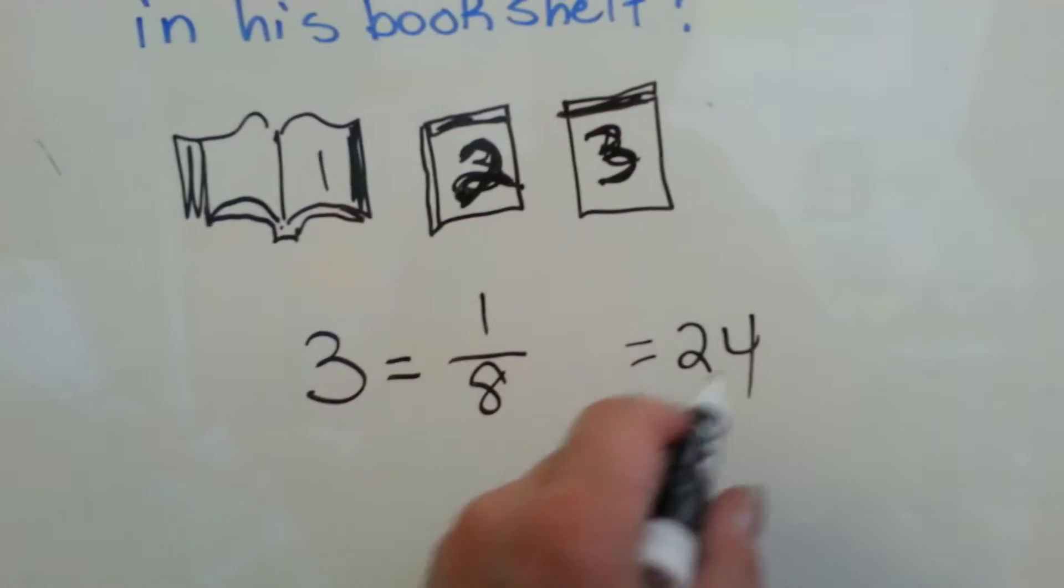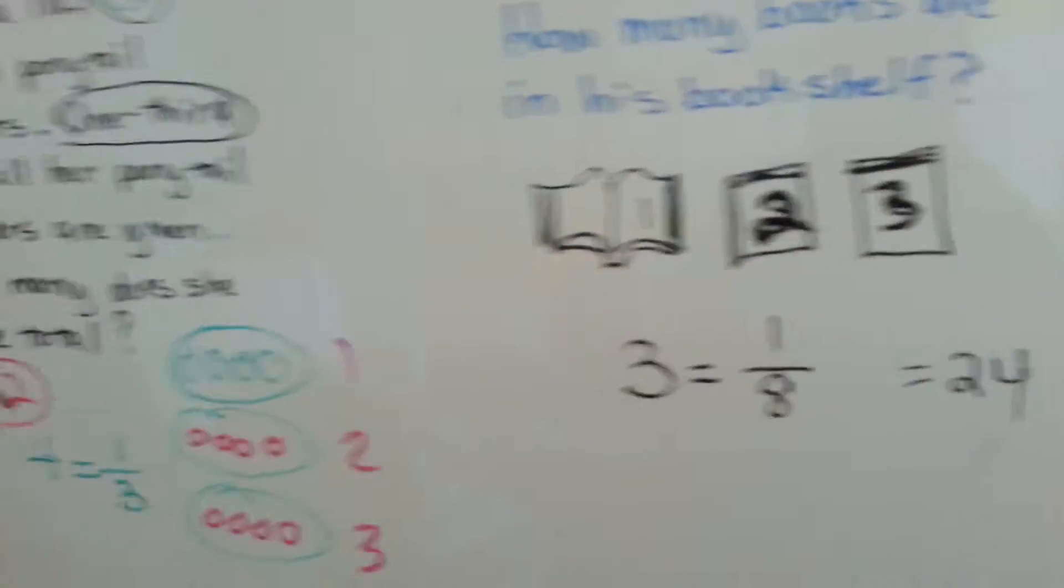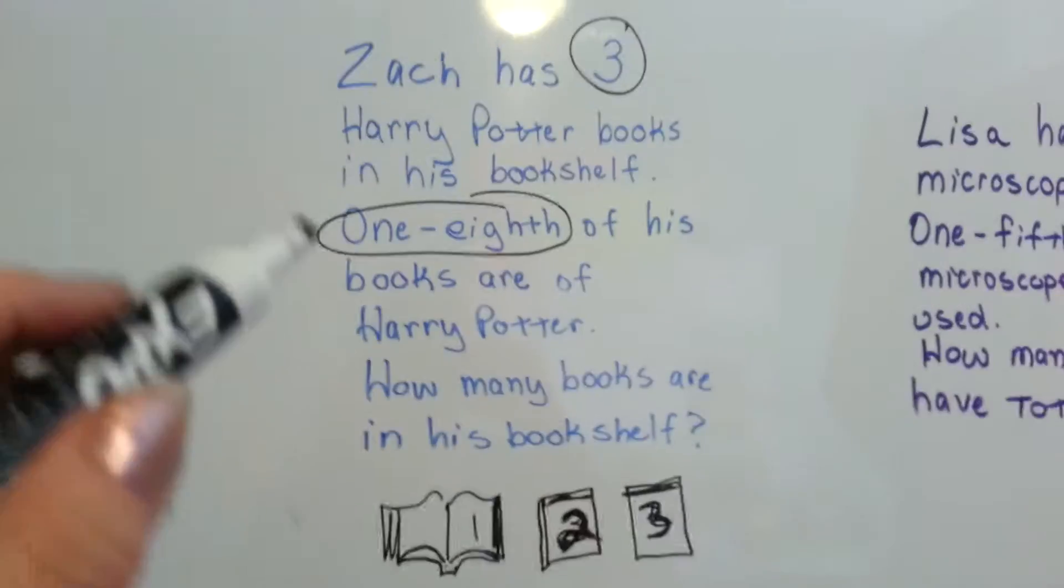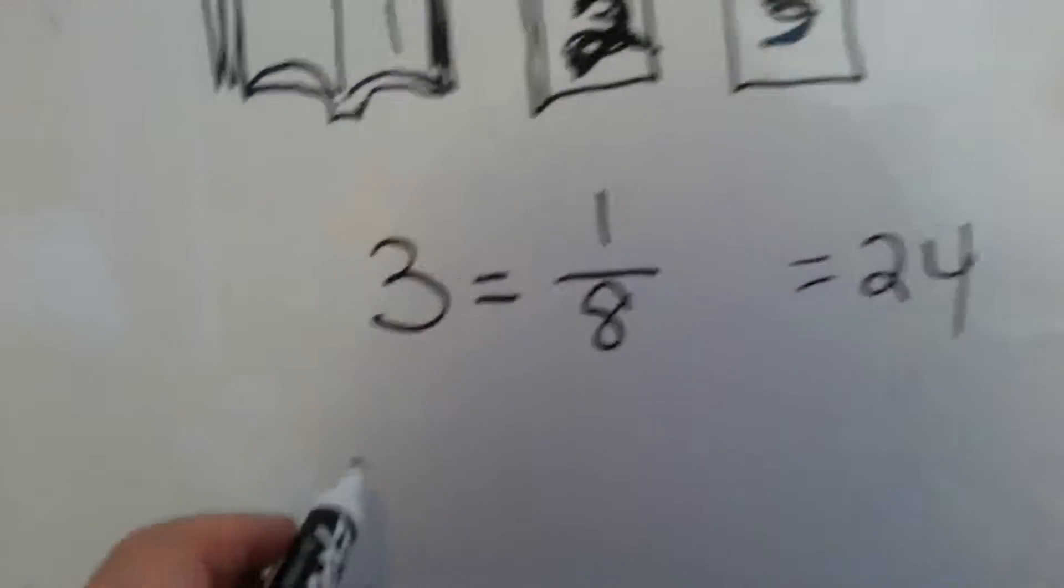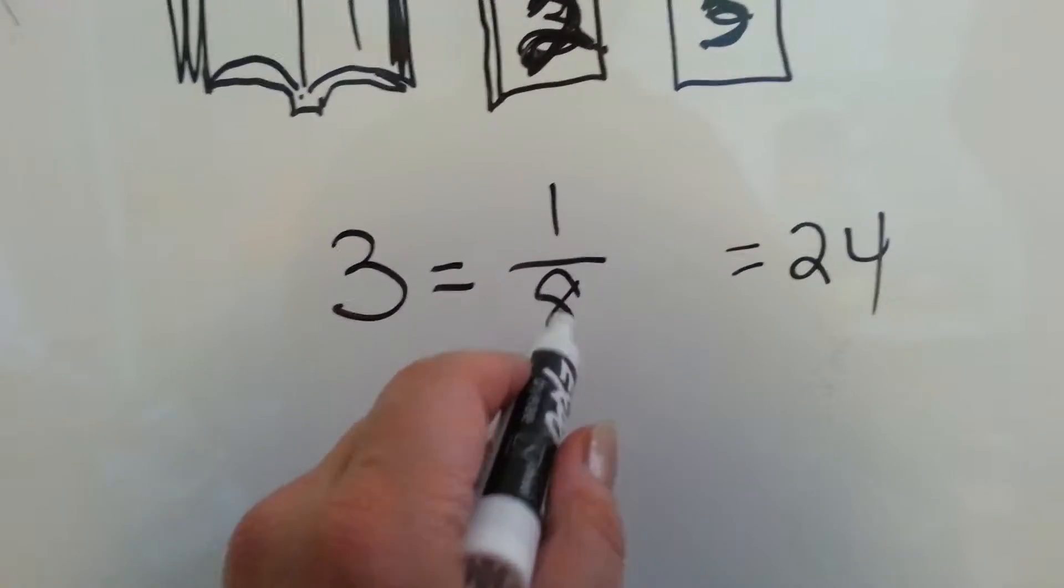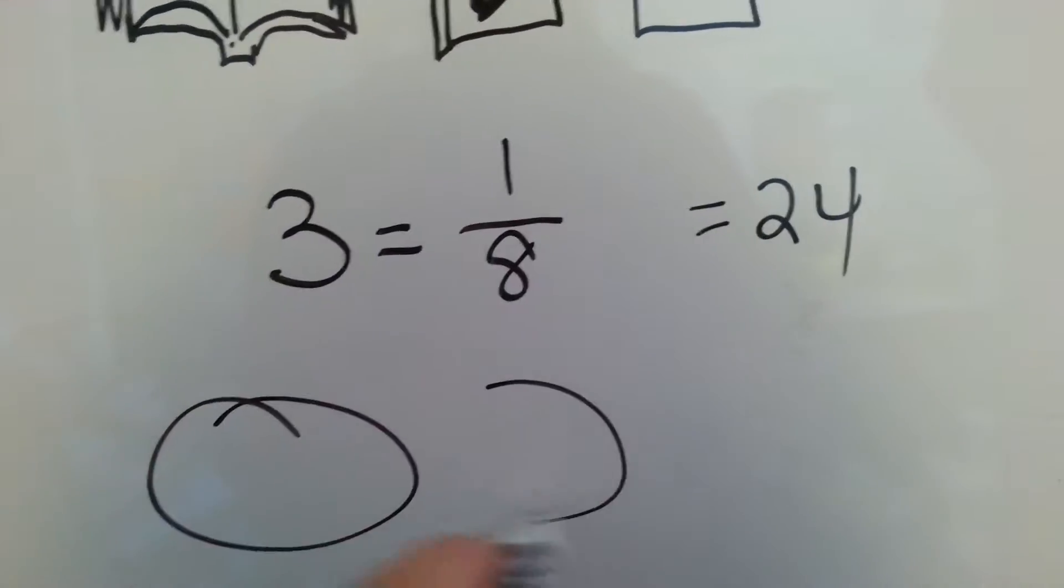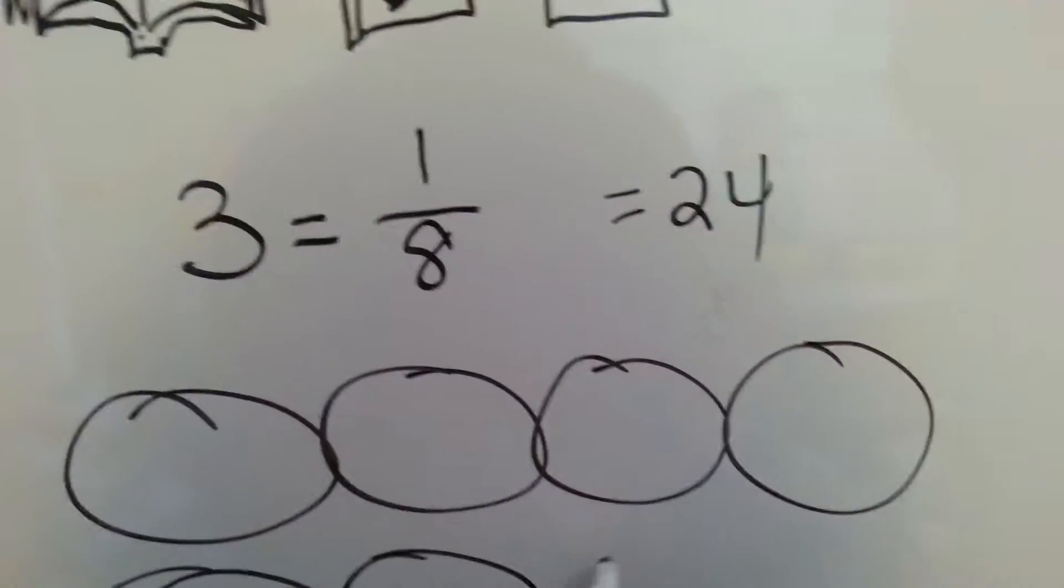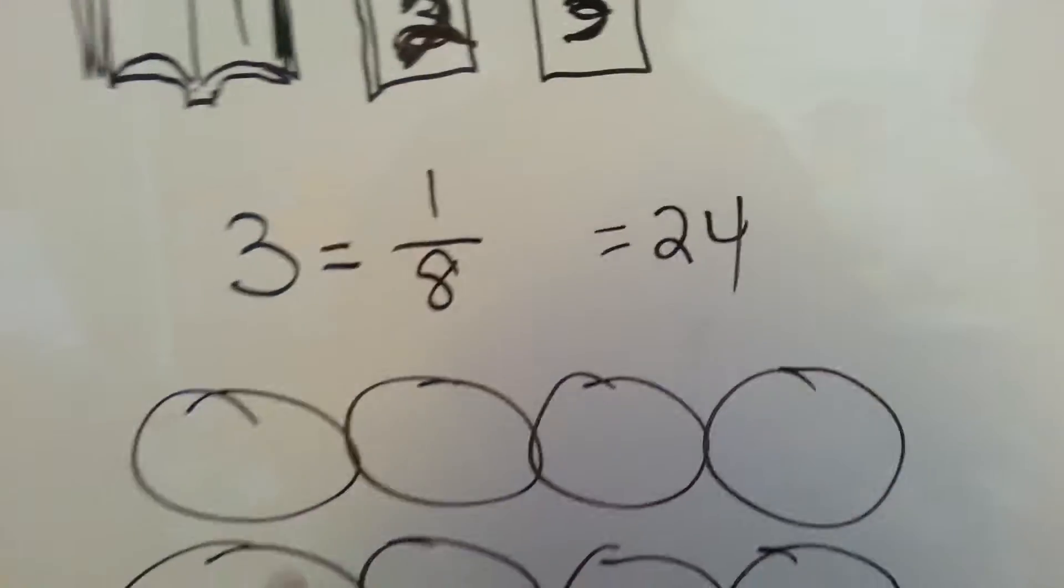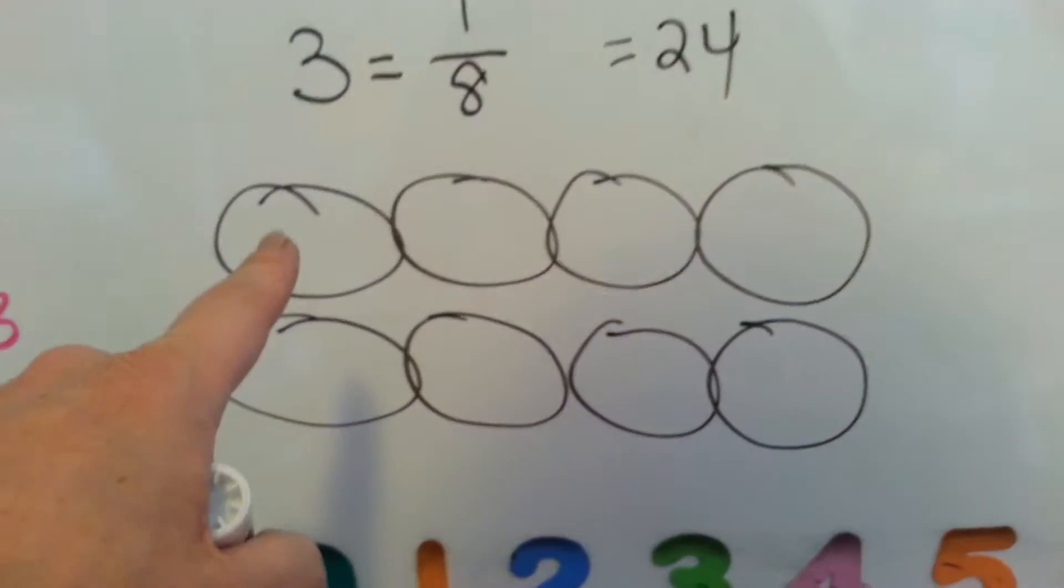Twenty-four times one is twenty-four. Now let's see if this works in the picture way. So three books is one-eighth. That means we need eight groups. That's how many groups we need. One, two, three, four, five, six, seven, eight. And we need three in each group.